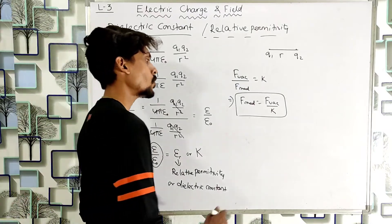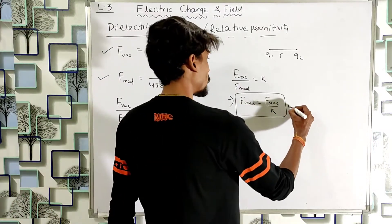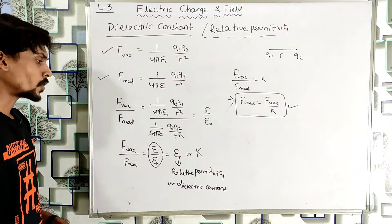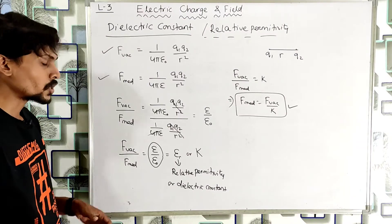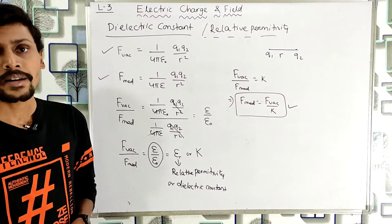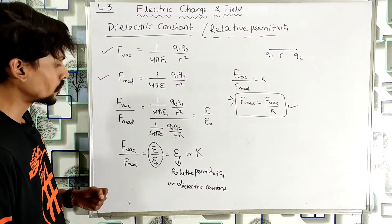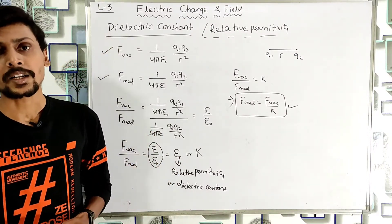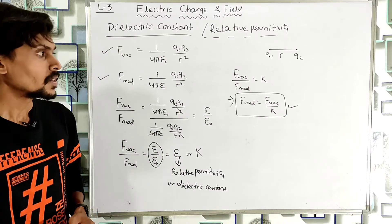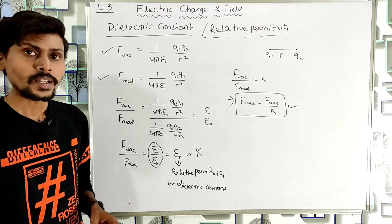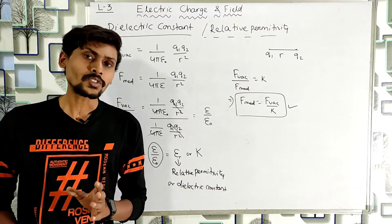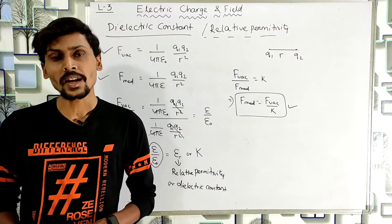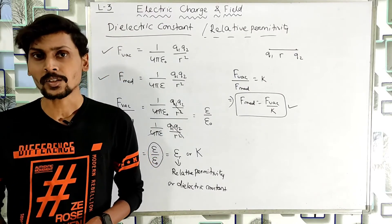F_medium = F_vacuum / K. So if we know the force between two charges in vacuum and the dielectric constant of the given medium, we can calculate the force in that medium.